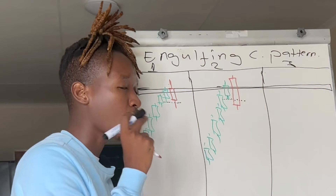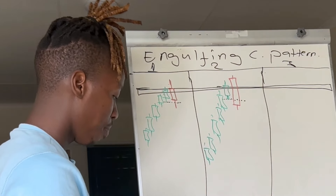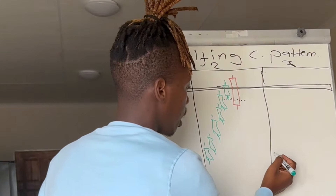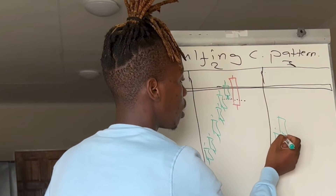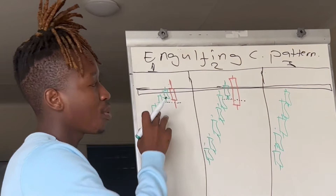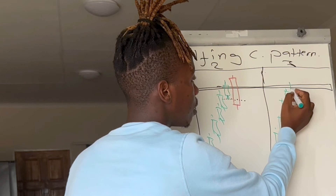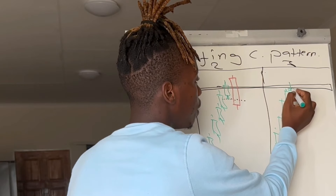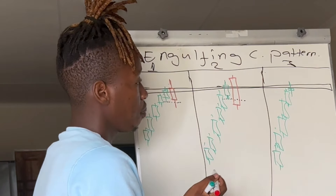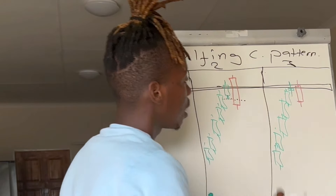The third candlestick pattern is my go-to, very high probability engulfing candlestick pattern. Let's say that price all along was making its way upward and when price actually reaches our resistance it then gives us something like this — and then preferably gives us a candlestick that looks like this.